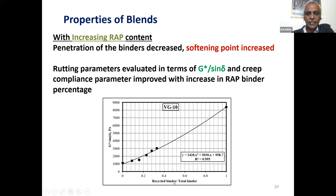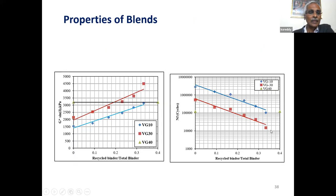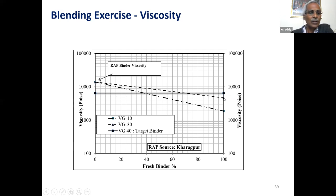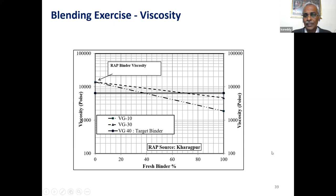As expected, with increase in RAP proportion, the G*/sinδ parameter (rutting parameter) increased. The fatigue life estimated from the LAS test decreased with increase in RAP proportion — these are expected results. Blending charts were carried out for different proportions of fresh binder in the total binder against viscosity, and from these charts, the proportion of RAP that can be used with VG-10 and VG-30 was identified. This showed how much RAP and how much fresh binder can be used — when using VG-10 versus VG-20, this is the proportion of fresh binder in the total binder that can be used. For different combinations of materials, the proportions of RAP binder that can be used in the total binder were summarized for different virgin binders and different sources of RAP binders.